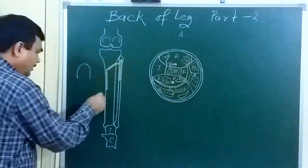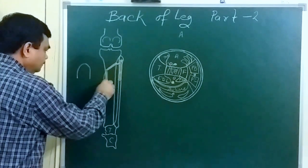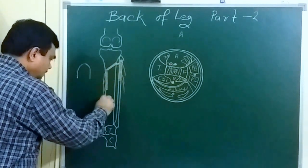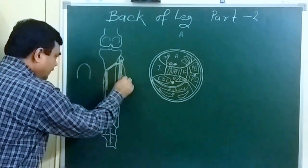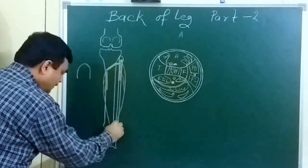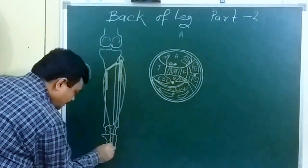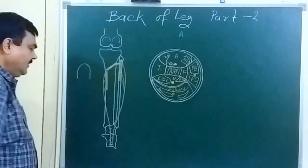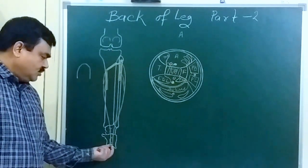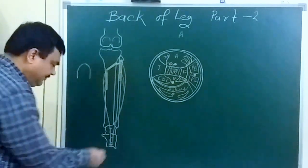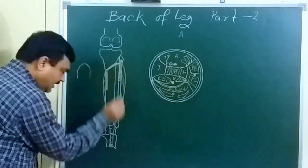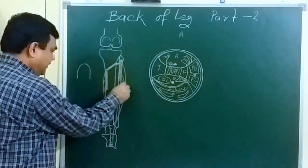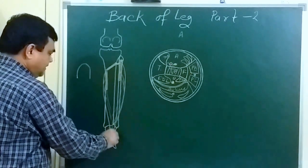It is inserted on the posterior one-third of the middle of the posterior surface of the calcaneum. This muscle is centered here — this is the tendon.